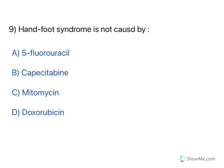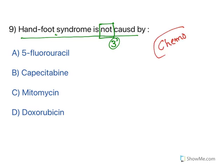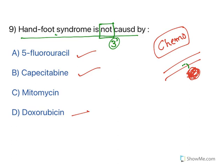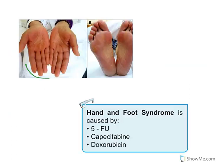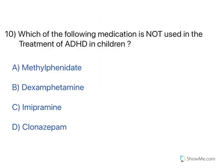Moving on: hand and foot syndrome is not caused by — again an except question. Three drugs cause it and one does not. Hand and foot syndrome is shown by some chemotherapeutic agents. When anti-cancer drugs leak out of blood vessels, they cause irritation resulting in redness of the hands and feet — hand and foot syndrome. Anti-cancer drugs 5-fluorouracil, Capecitabine, and Doxorubicin all cause this syndrome. Mitomycin does not cause it. The answer is Mitomycin.